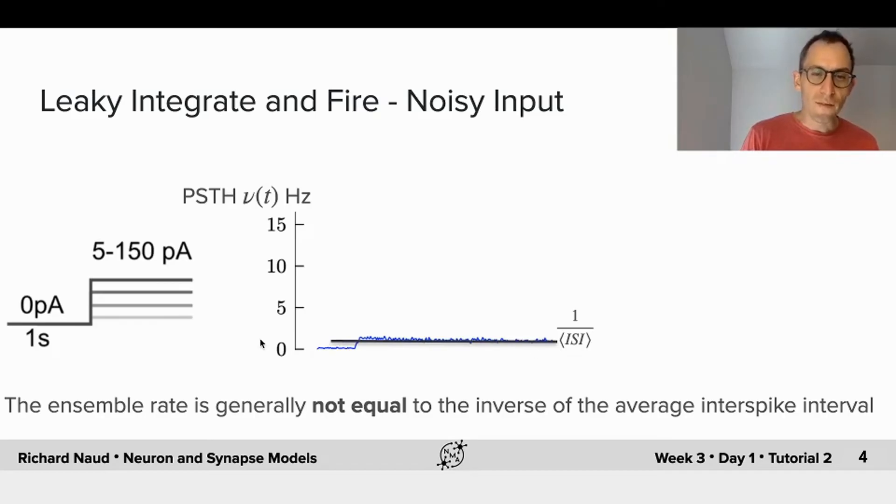And the black line corresponds to the average inter-spike interval. That is, in every neuron, I calculate the average inter-spike interval, and take one over this, I get a firing frequency, which matches the ensemble rate. This is true when the input is weak.